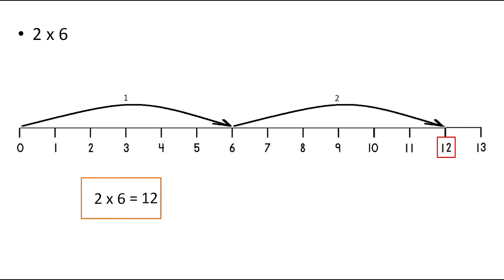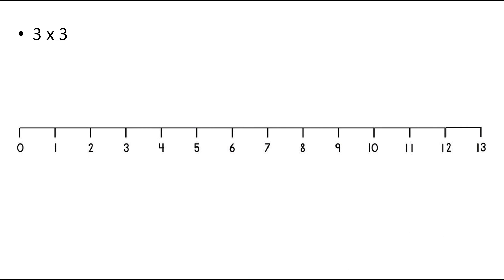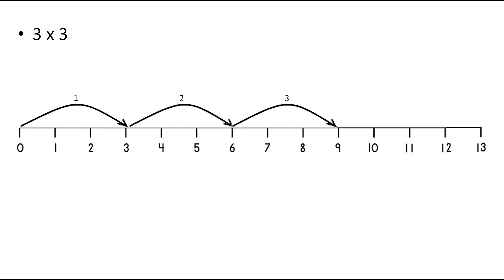Let's take the second one, that is 3 into 3, which means 3 times 3. So, move 3 units at a time to the right and make 3 such moves. The first move is on 3, the second move is on 6 and the third move is on 9. Therefore, the answer of 3 into 3 is 9.